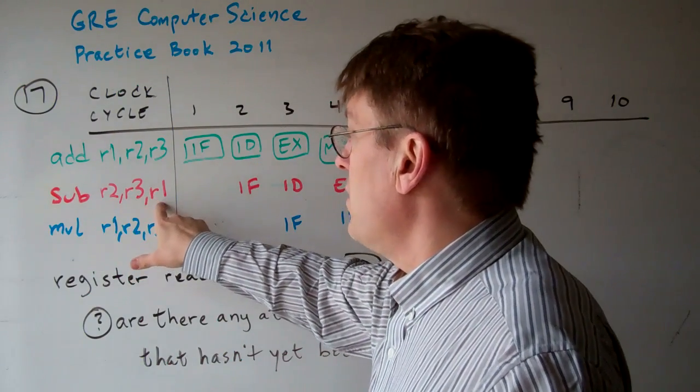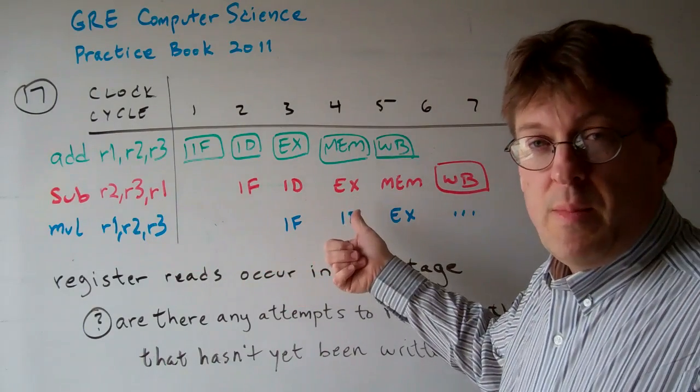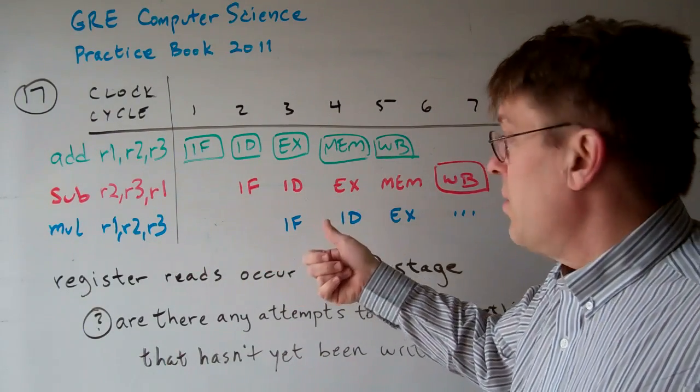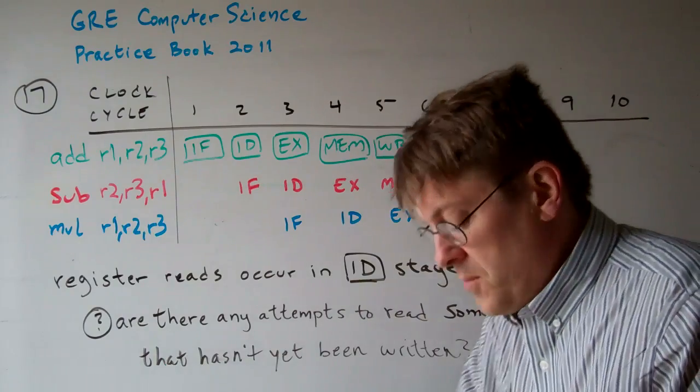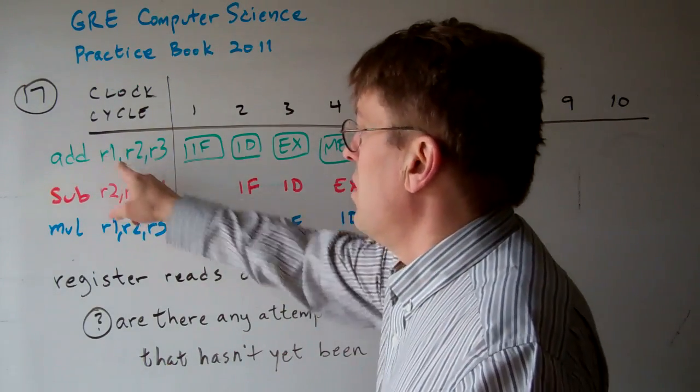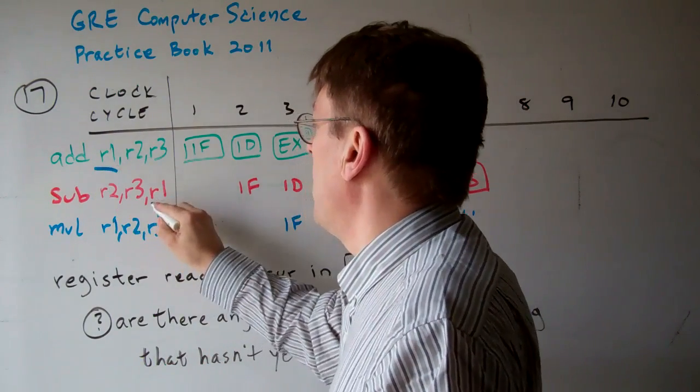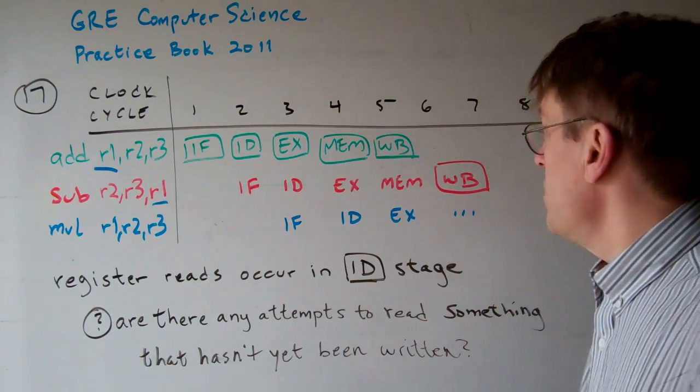So R1 is not ready to be used yet. What do you have to do? You've got to pop a bubble in there or a stall of some sort. But anyway, the point of it is that one of the problems is this RAW hazard right here between R1 and R1. So that's one of them. That's one data hazard that needs to be detected.